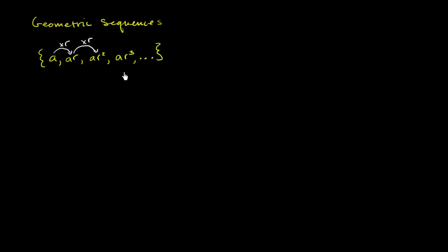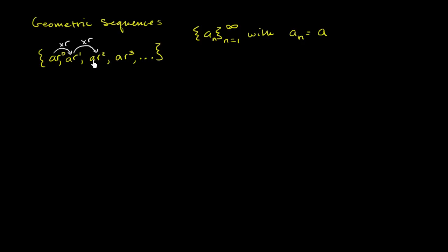We can denote this sequence in different ways. We can denote it explicitly: the sequence a_sub_n from n=1 to infinity, with a_sub_n equal to a times r to the n minus 1. Note that a is the same as a times r to the 0th power. The second term is a·r to the first power, the third term is a·r squared, and the nth term is a·r to the n minus 1. You can verify: for the second term, a times r to the 2 minus 1 gives a·r to the first power — it works out.